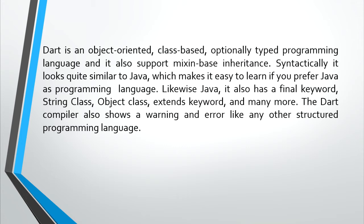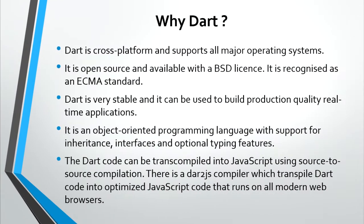The DART compiler also shows warnings and errors like any other structured programming language. DART is an object-oriented programming language with support for inheritance, interfaces, and optional typing features. DART code can be transcompiled into JavaScript using source-to-source compilation.